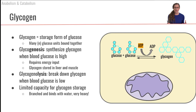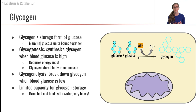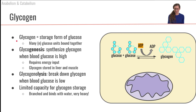Now let's start talking about some storage forms of these nutrients. Glycogen is the storage form of glucose. Glycogen is essentially a very large branched compound that's a whole bunch of individual glucose molecules all bound together. We can see that right here — there's our glycogen.